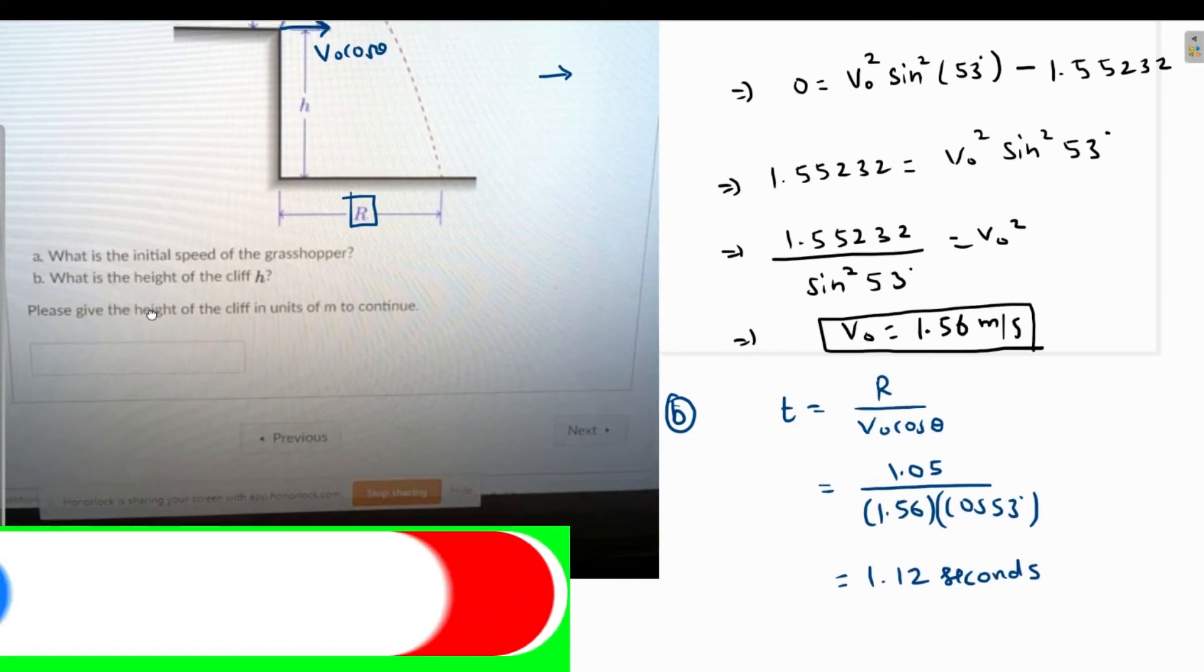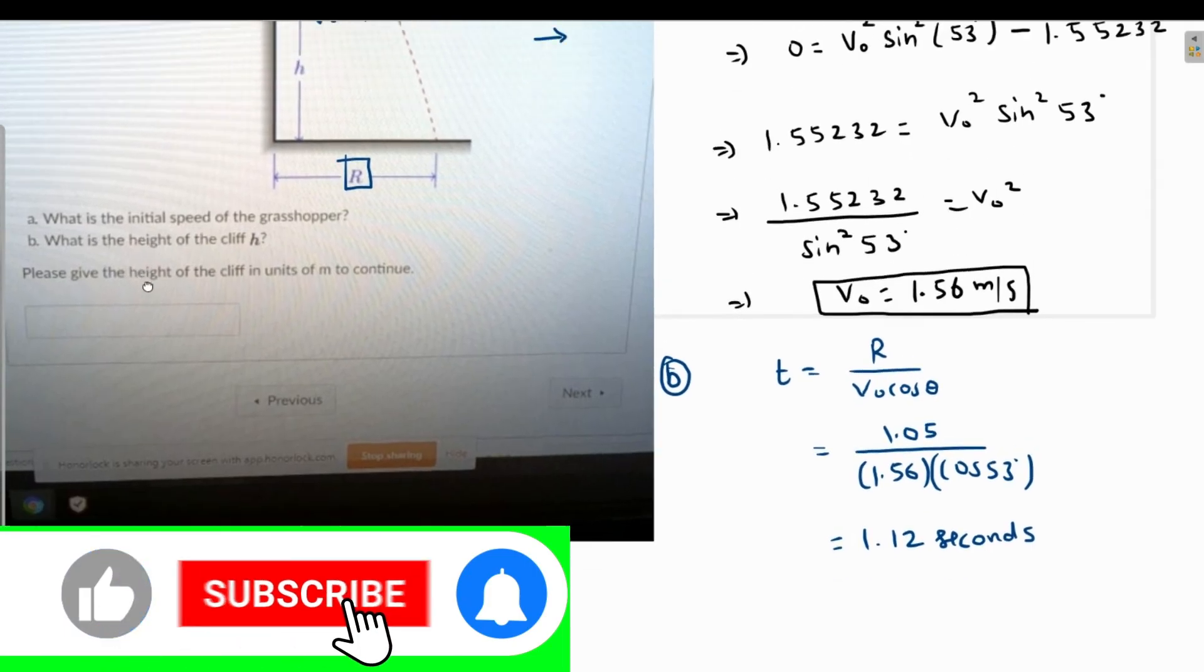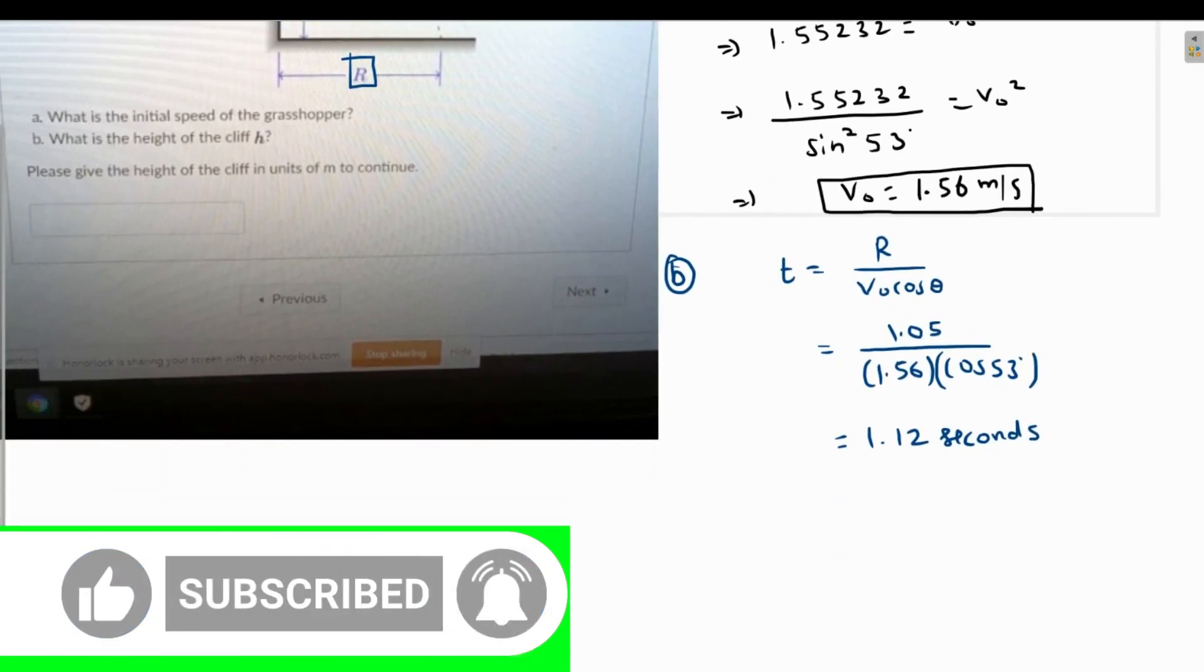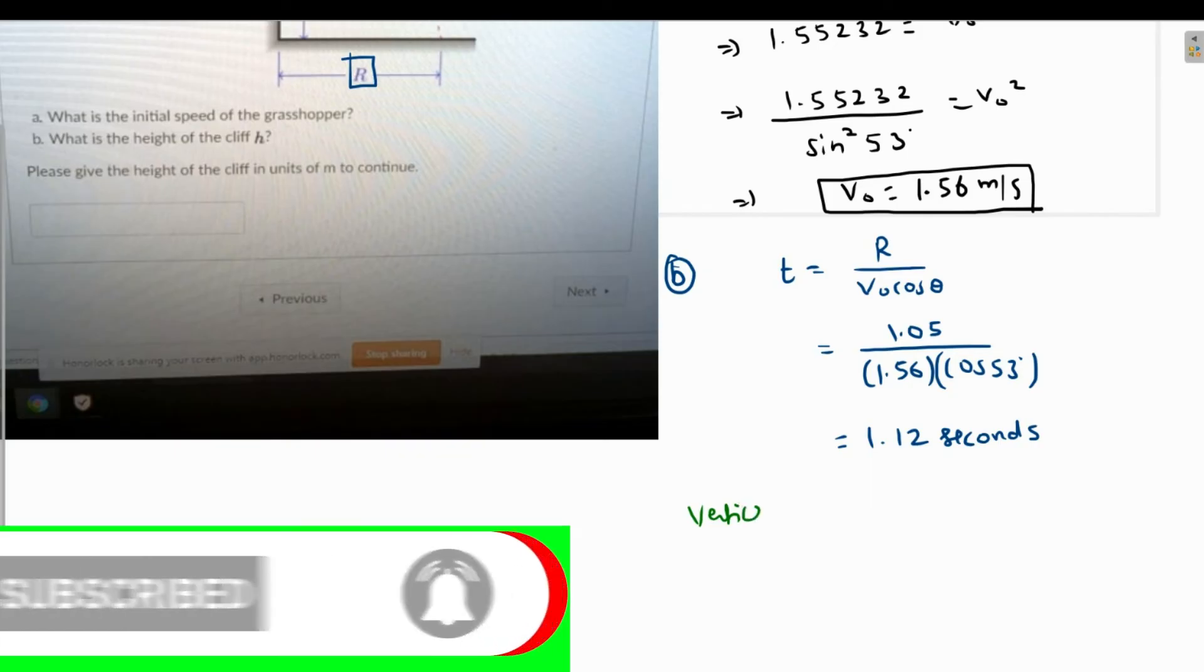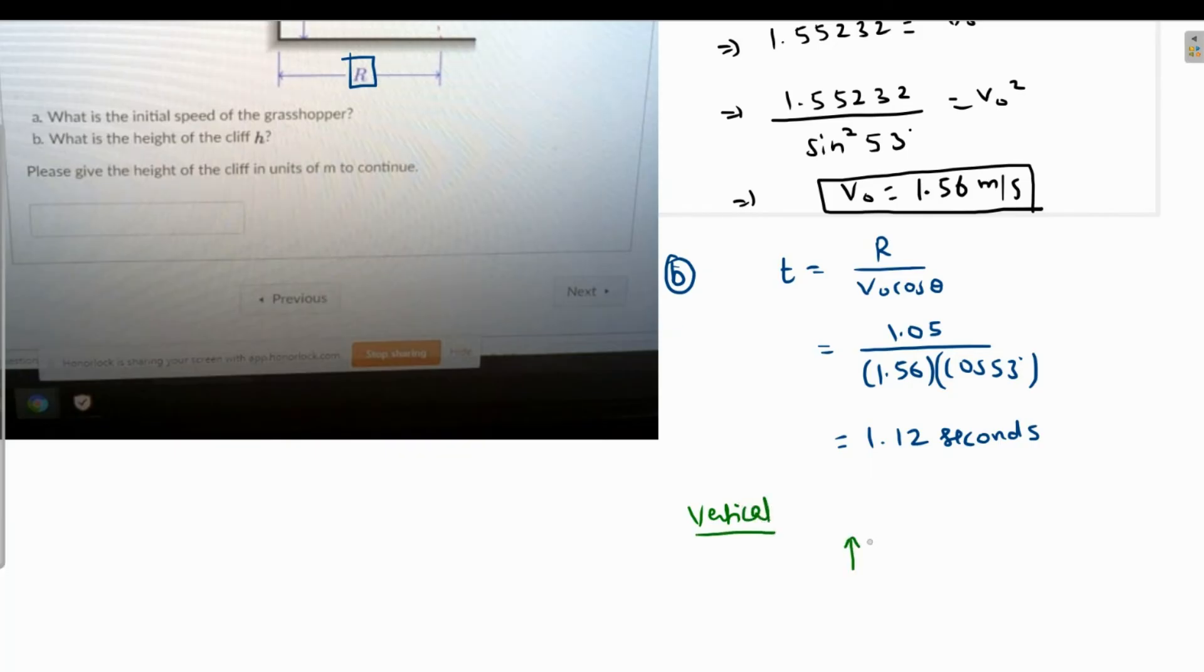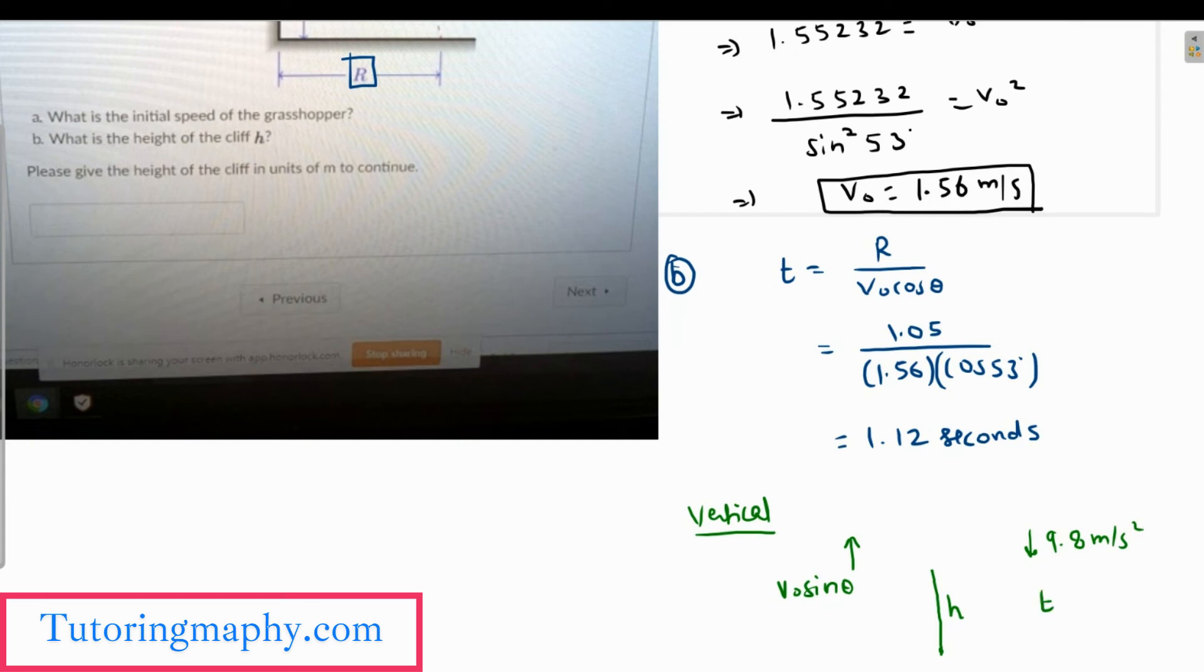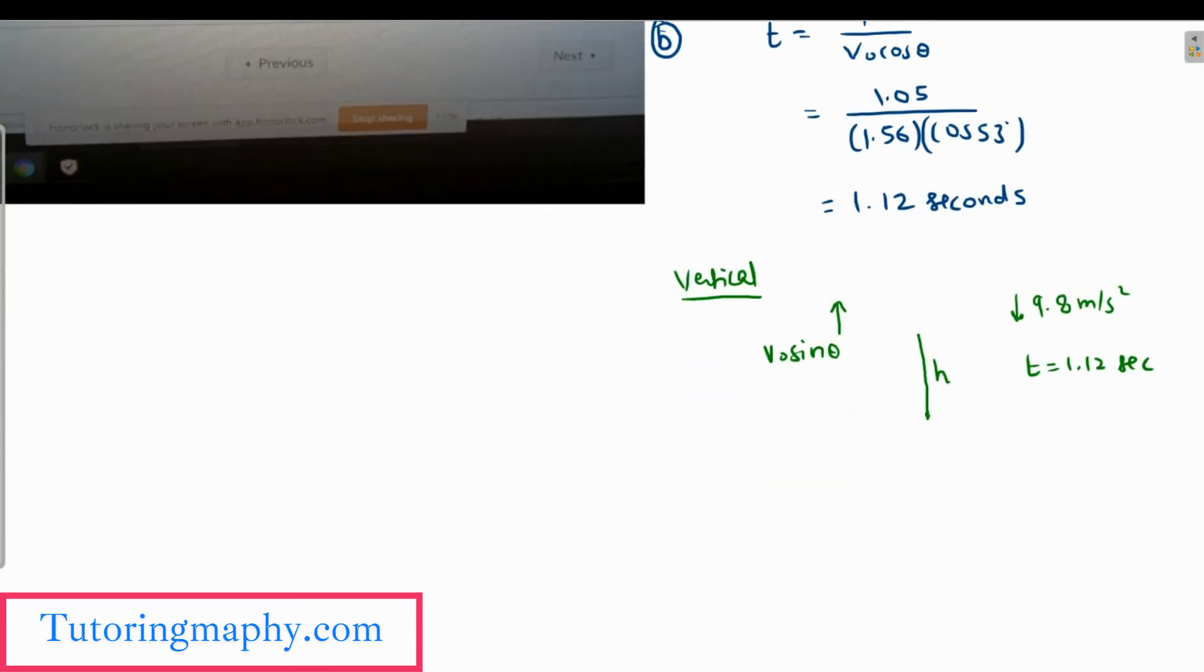This is the time, and we need to find the vertical height h. Now we use the vertical motion again. In the vertical motion, we know that the initial speed was upside, which was v naught sine of theta. Its displacement is h units down which we have to find, its acceleration is 9.8 meters per second squared down, and the time of flight is 1.12 seconds. We can use the second equation of motion: h equals minus v naught sine theta times t plus half a t squared.